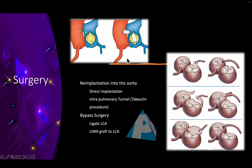Rarely, the Takeuchi procedure is performed: you go through the pulmonary artery, create a baffle, and tunnel the artery into the aorta via a transpulmonary puncture. This is not a procedure of choice these days because as the patient grows older, this graft does not grow with them, becomes relatively smaller, and there are many issues associated with this surgery.